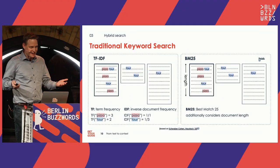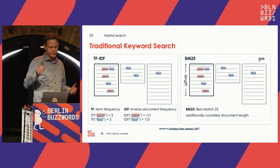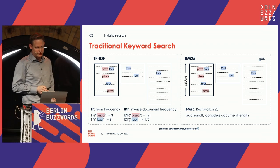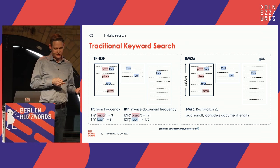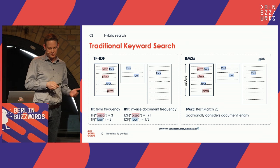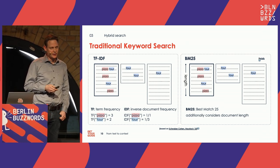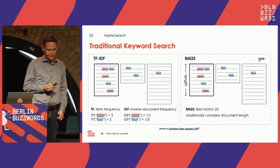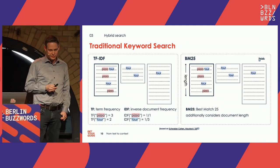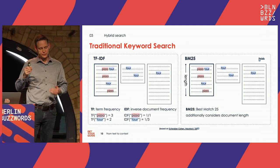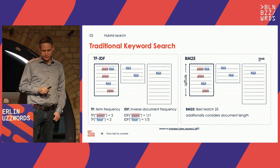I still wanted to briefly introduce what it means for those who haven't heard about it. On one hand, we have the traditional keyword search approach, which is based on frequencies. If a word like 'pizza' from the query appears more often in a document, that's a higher score in term frequency. If it appears in few other documents, that's a higher inverse document frequency. This was improved to a BM25 score by also considering the length of the document.